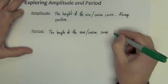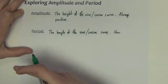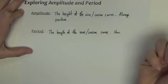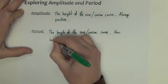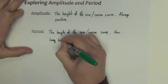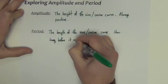The period is the length of the sine or cosine curve. Now I know you're thinking length, its length is infinite, it goes on forever. Well, more specifically, it's how long before it repeats.